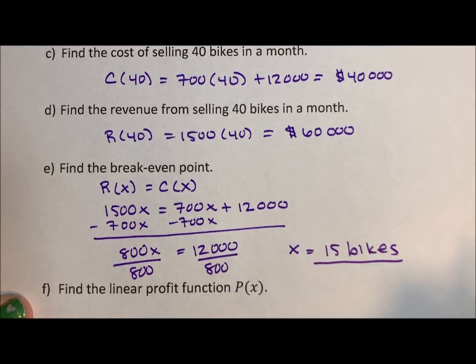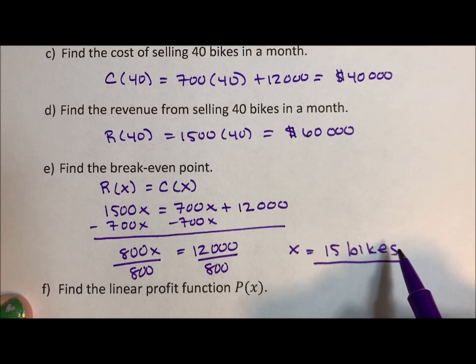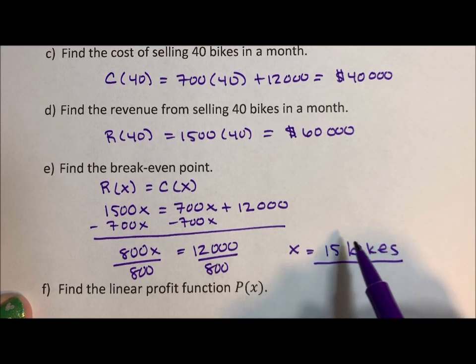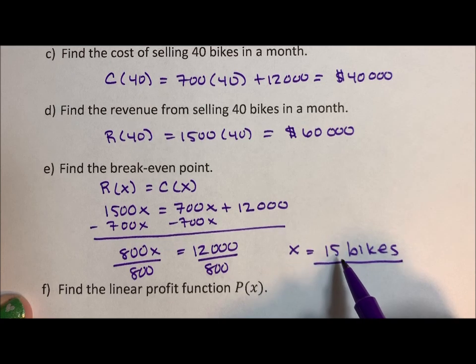Again, there's our label. So what does this mean? It means that once the shop sells its 15th bike, they've broken even. The 16th bike, they'll start to make a profit.